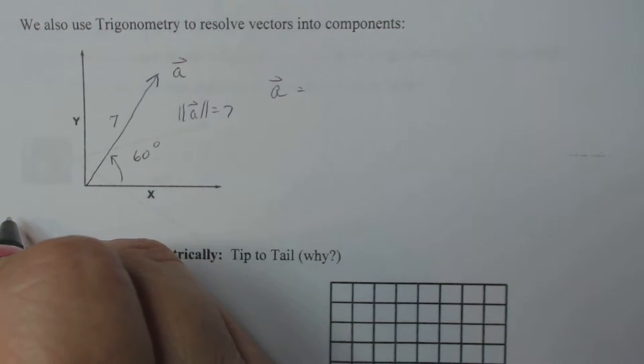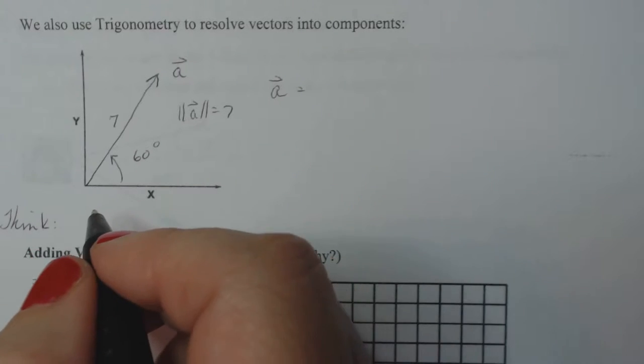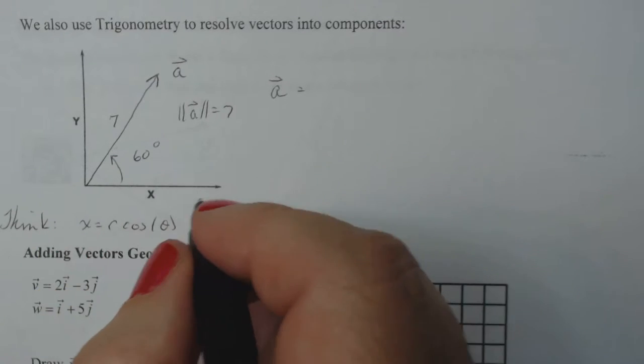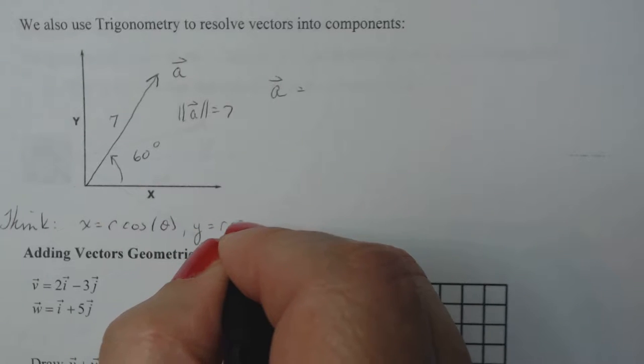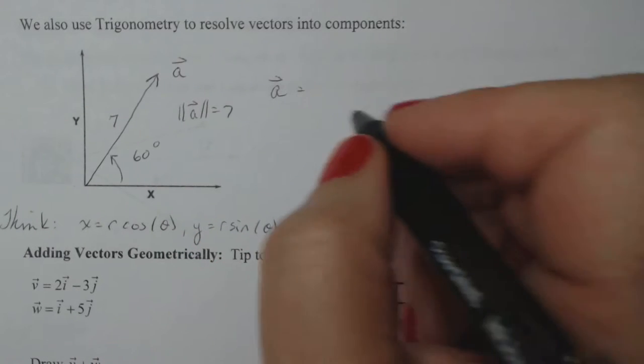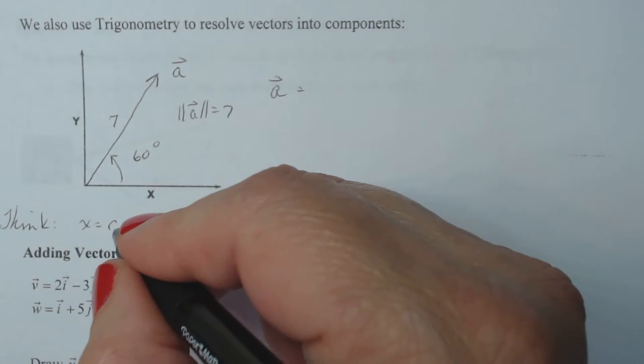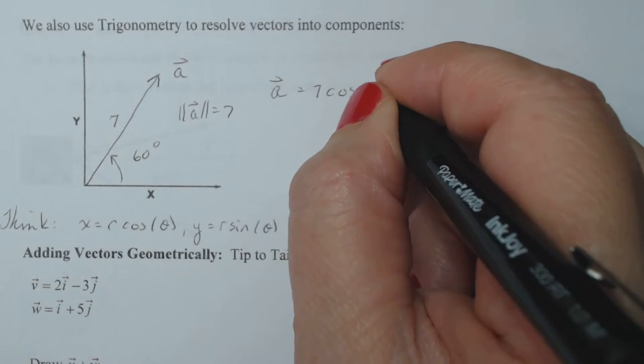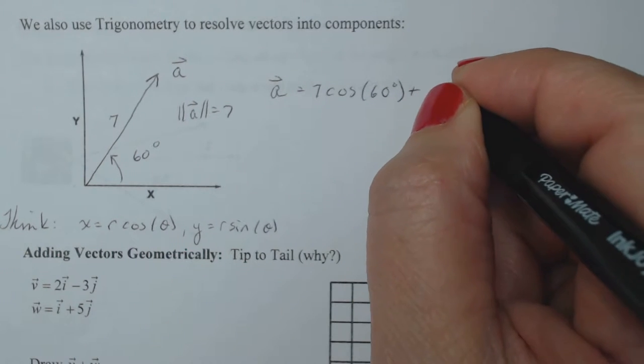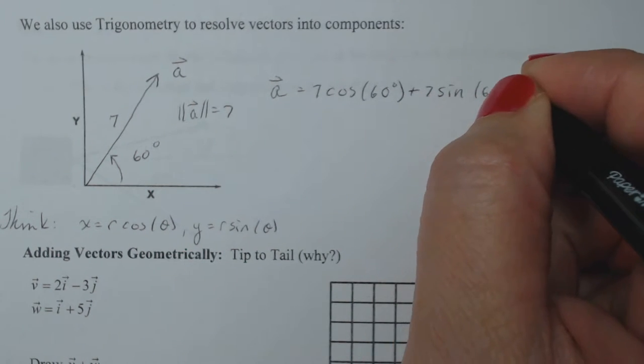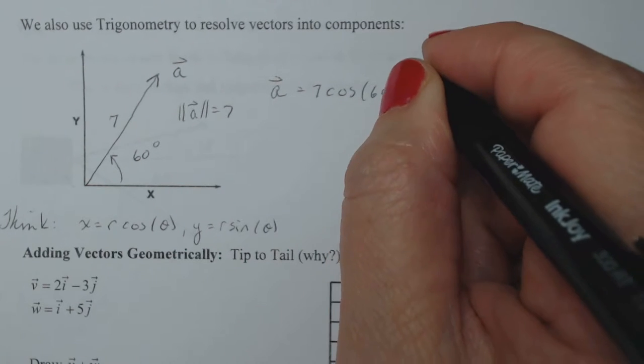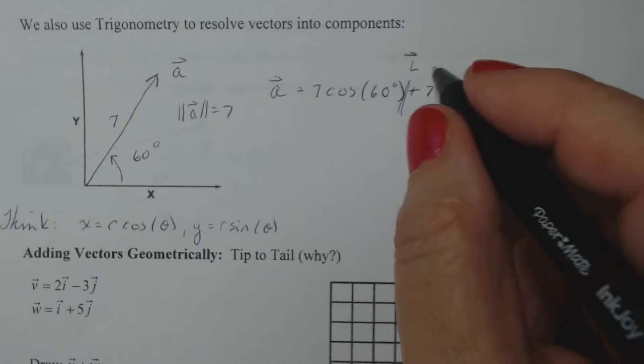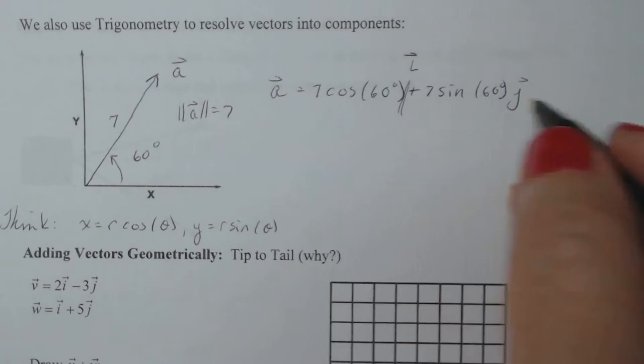So if I remember my trigonometry, this is what I'm gonna think. And I'm gonna remember x equals r cosine theta and y equals r sine theta. If I wanna write the components, my I component will be r, which in this case is gonna be the magnitude of a. So seven cosine of 60 degrees plus seven sine of 60 degrees J. So now make sure you have your I and J components and make sure that you have your cosines and sines in the right spot.